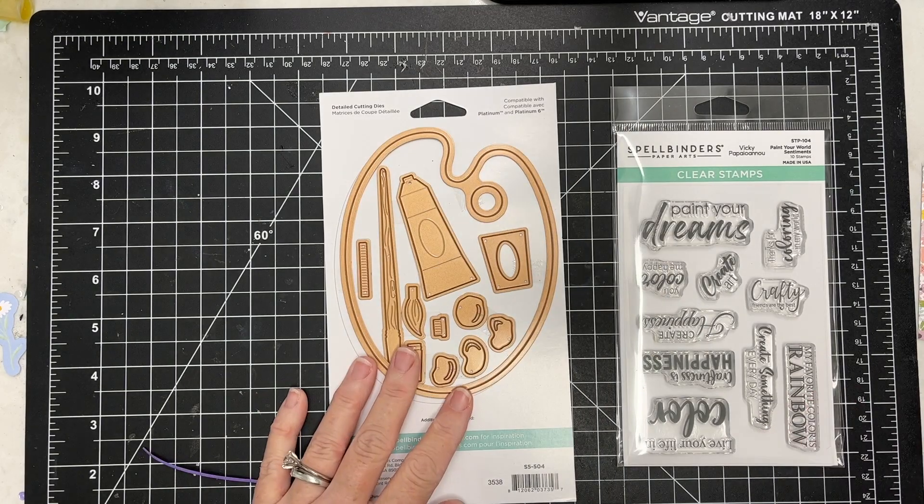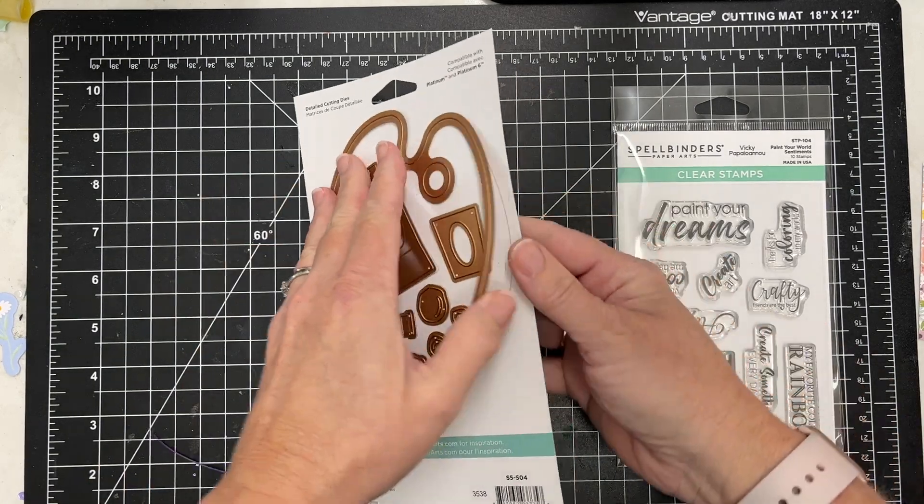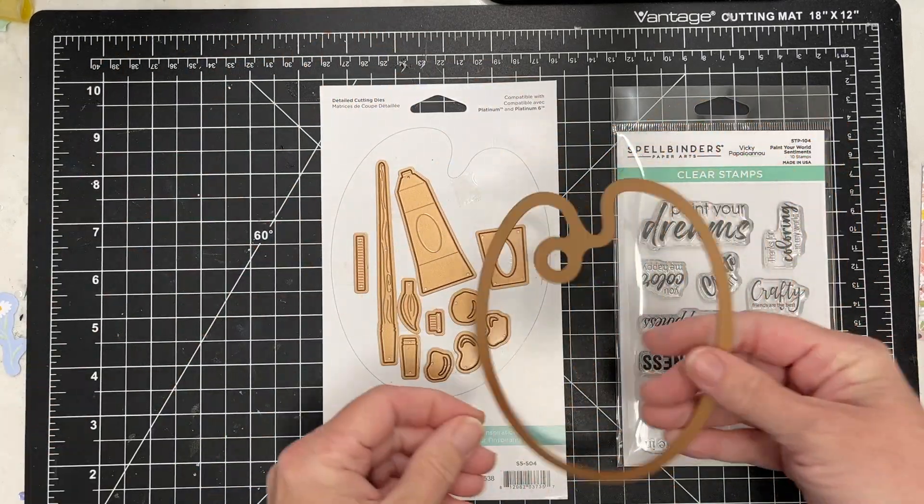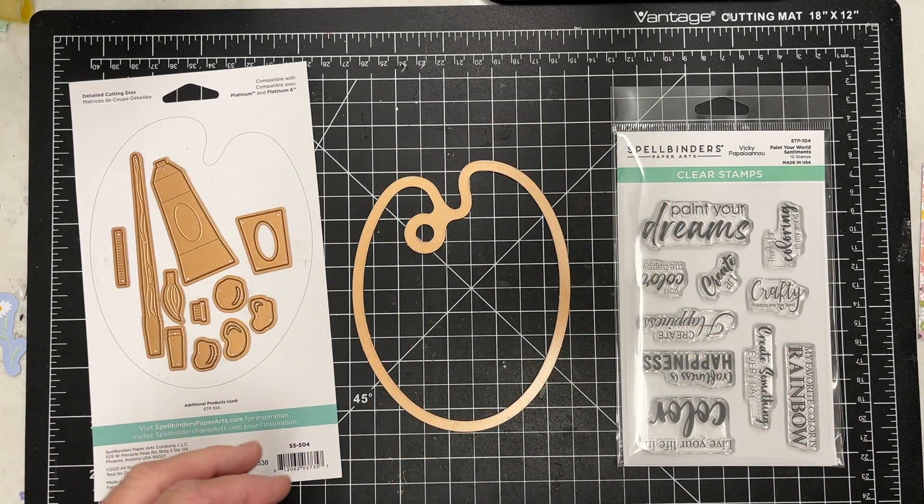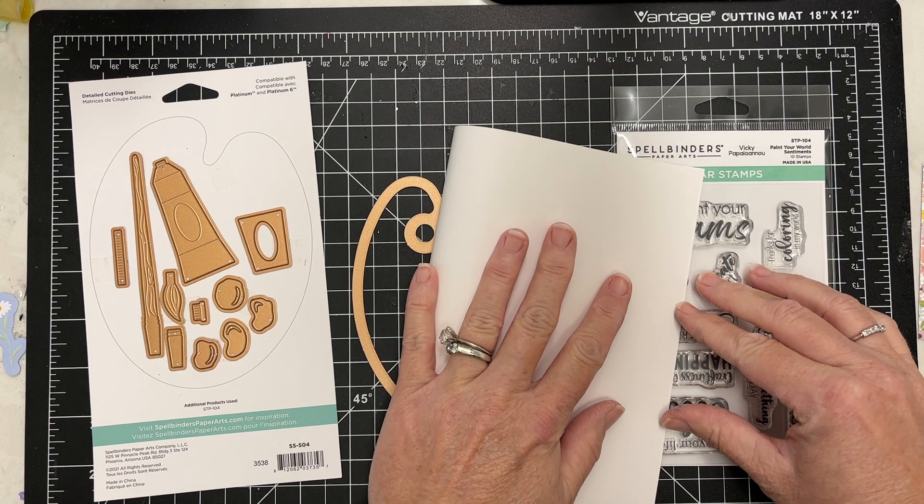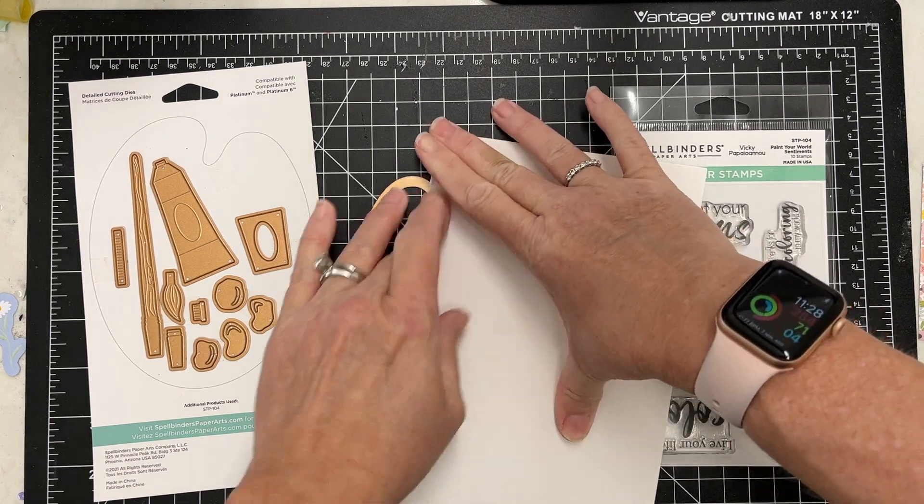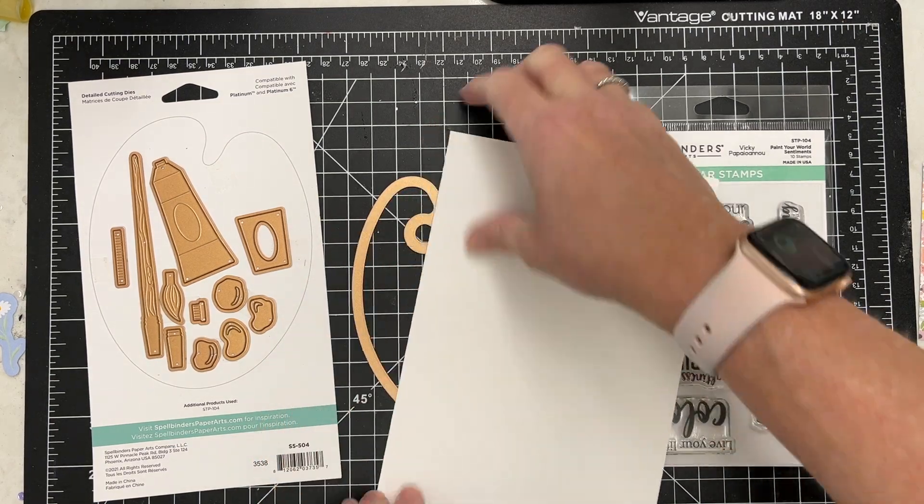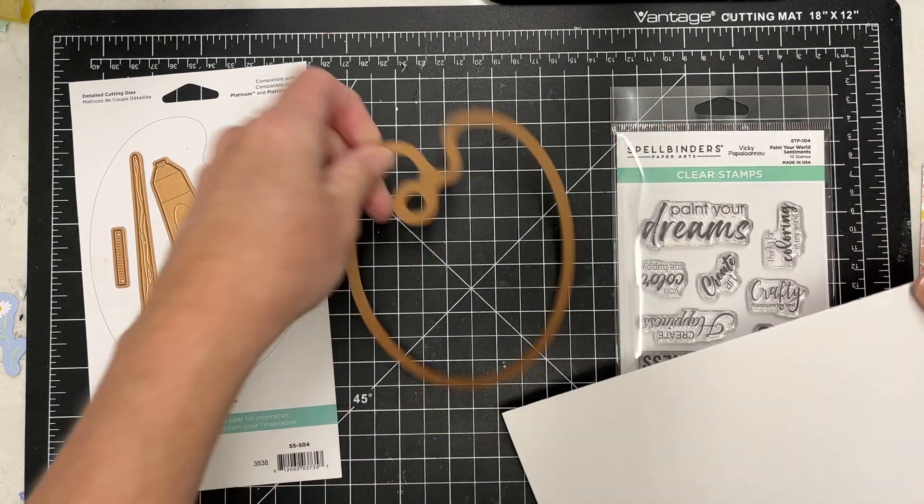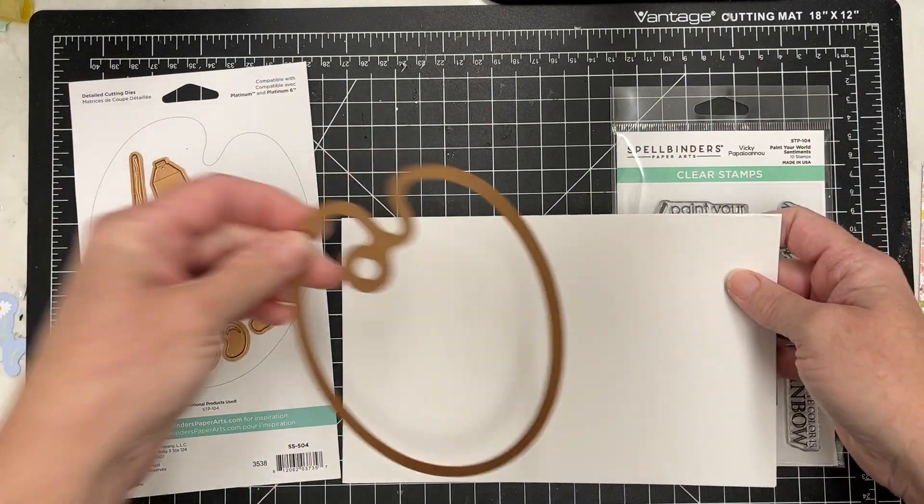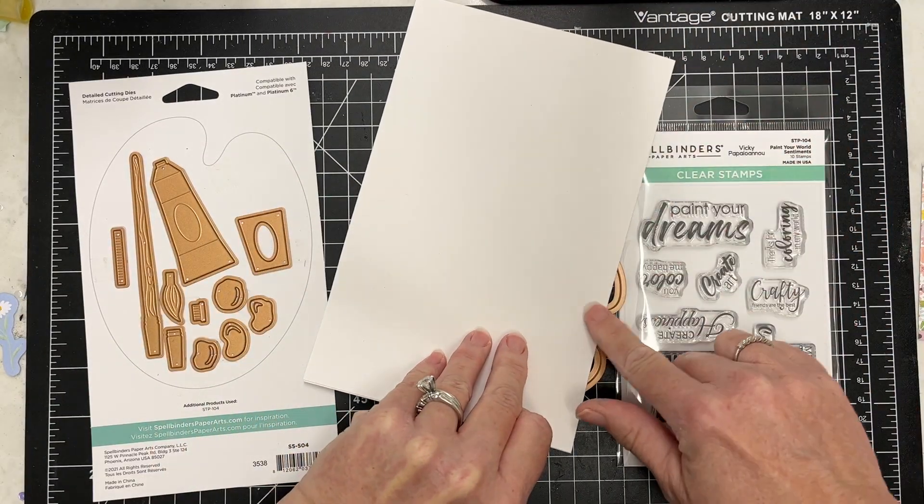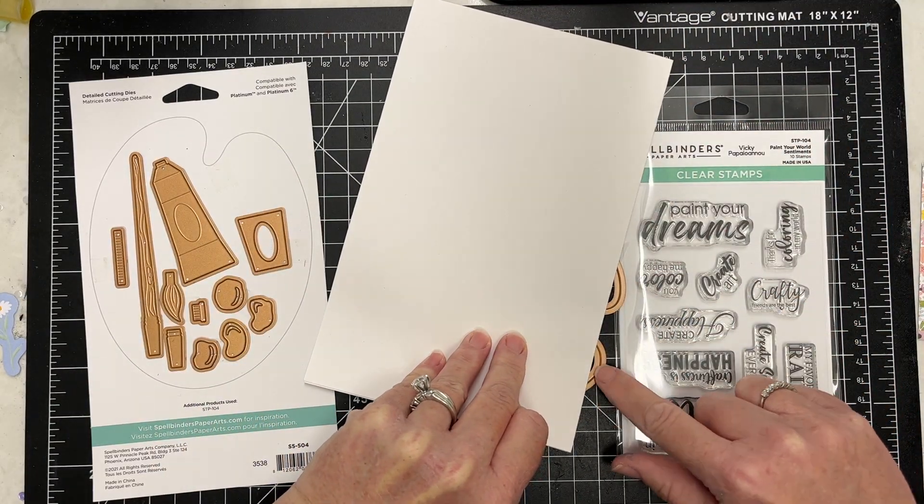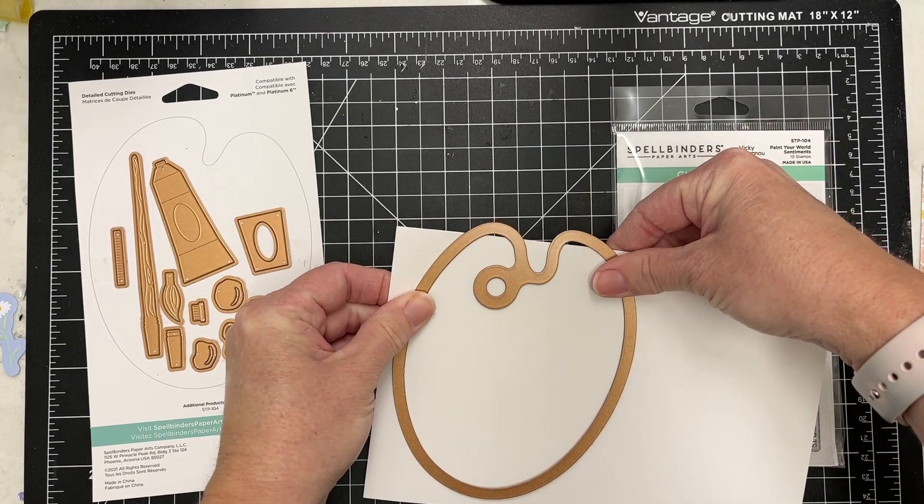So I'm going to show you how I'm going to use this paint palette. I'm going to make a shaped card. It is so easy to do. I'm just going to take a regular size sheet of cardstock and fold it in half, and I'm going to keep the folded edge at the top. I'm going to lay the die where I want my fold to be at the top.